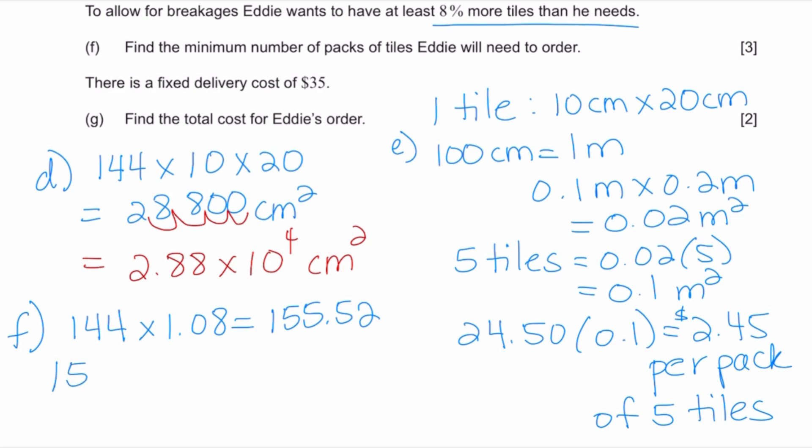So if you take 155.52 and you divide it by five, this means you need 31.104 packs. But when you go to the store, you cannot ask them for 31.104 packs, so you have to think he is going to need 32 packs, because if he only buys 31 packs, there's going to be not enough tile based on his calculation. So right now it's better for him to get 32.